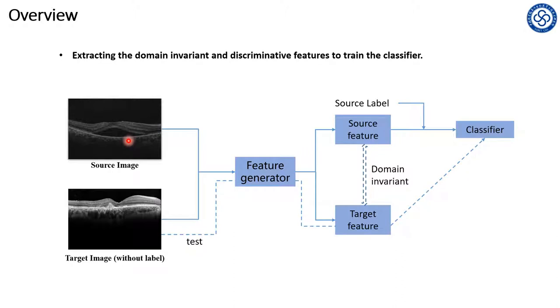First, we define a set of images with labels as source domain and the images without labels as target domain. We aim to train a classifier which can perform well on both two domains.